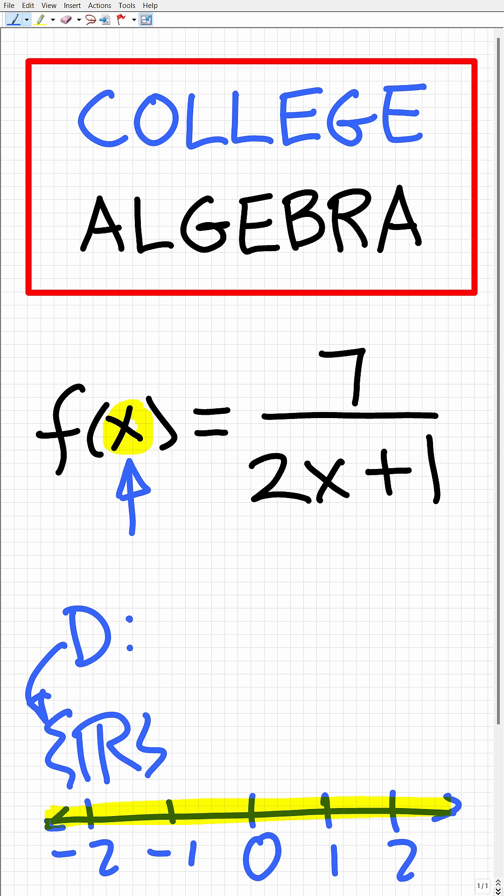Well, basically we can plug in any number that we want into a function, but if any value causes these two conditions, it's not allowed in the domain. And that is any value that causes you to have a zero in the denominator or a negative underneath a square root. So these are the two conditions that you cannot have when we're talking about the domain under the set of real numbers.